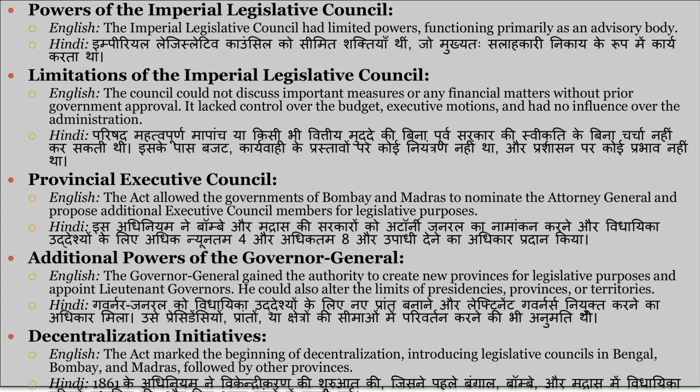The council could not discuss important measures or any financial matters without prior government approval. It lacked control over the budget, executive motions, and had no influence over the administration. Parishat mehetvapurn mapanchiya kisi bhi vittiy mutte ki vina poorv sarkaar ki svikriti ke vina charcha nahi kar sakti thi. Iske paas budget, karavahi ki prastavon par koi niyantran nahi tha, aur prashasan par koi prabhav nahi tha.